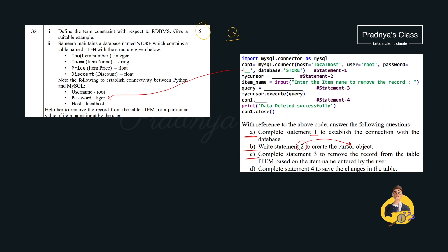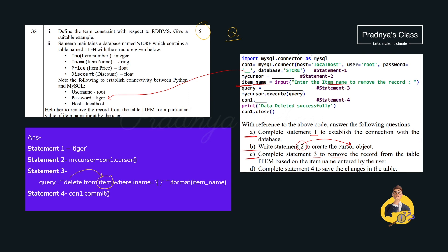Question C: complete statement 3 to remove the record from the table 'item' based on the item name entered by the user. We have taken the item name from the user and stored it in a variable called itemname. The query will be: DELETE FROM item WHERE iname = '{itemname}' — using the format function with a placeholder. Since iname is a string field, we enclose the placeholder in single quotes. Question D: complete statement 4 to save the changes in the table — to permanently save changes, we use the commit function. Hope you understood — whenever we use a placeholder for a string field, we must mention single quotes.